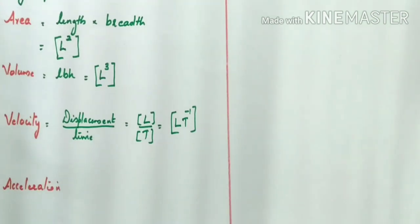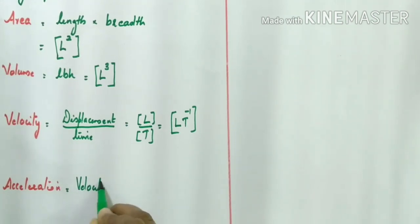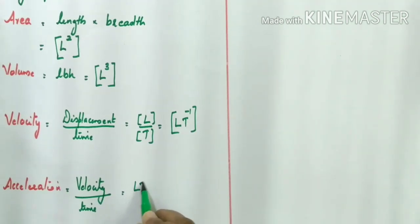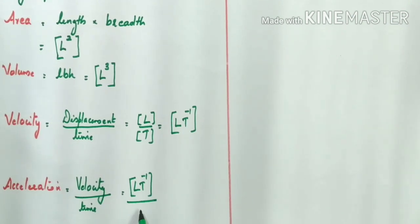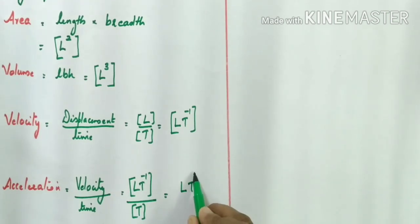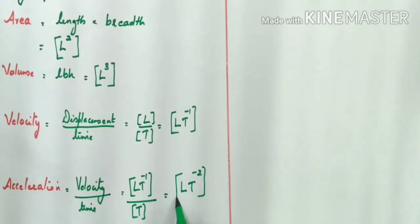Now, what is the dimension of acceleration? Acceleration is the rate of change of velocity, so it equals velocity divided by time. Velocity has dimension LT⁻¹. Dividing by time T — which has dimension T — gives LT⁻¹ divided by T. Bringing T from the denominator to the numerator, it becomes T⁻¹, and combining with the existing T⁻¹ gives T⁻². So the dimension of acceleration is [LT⁻²].